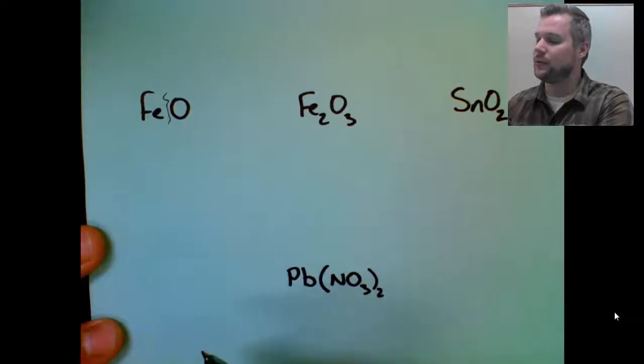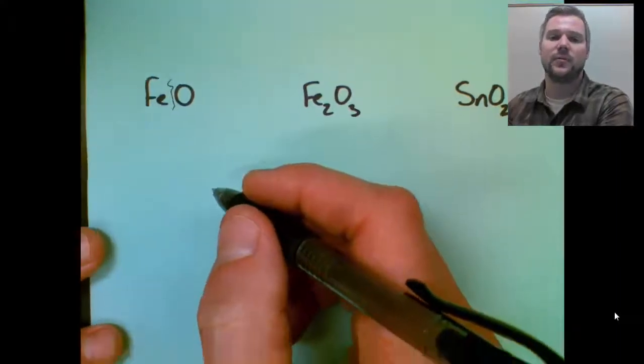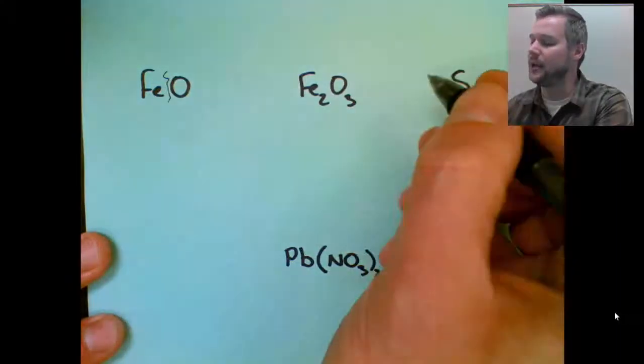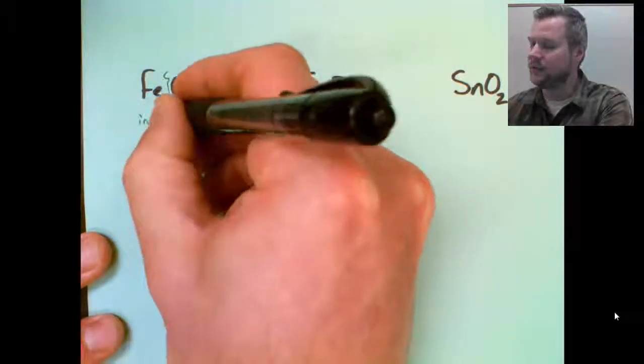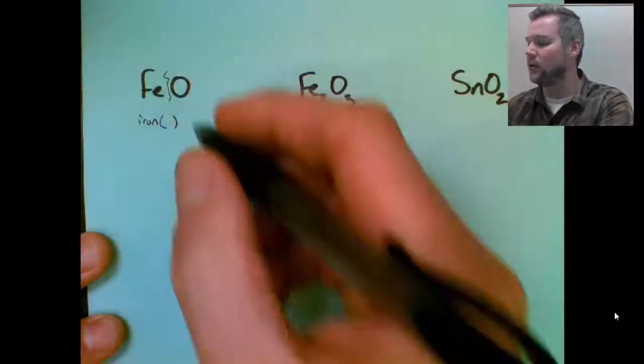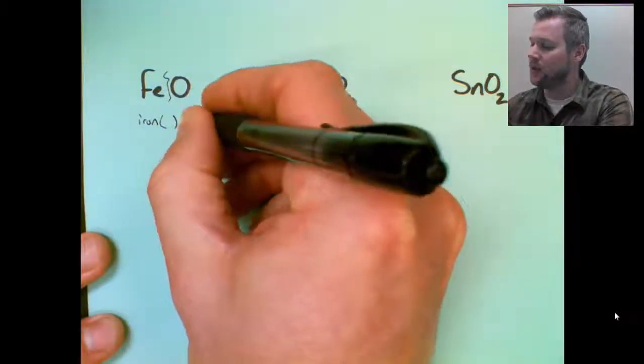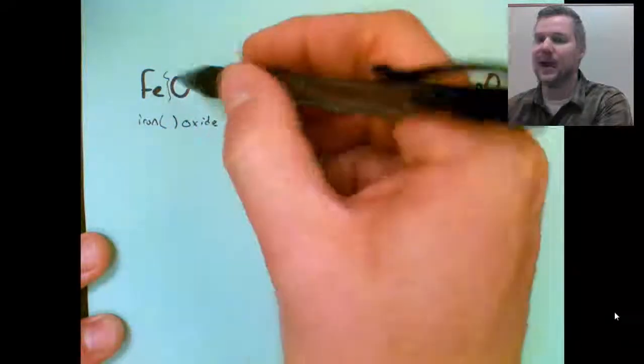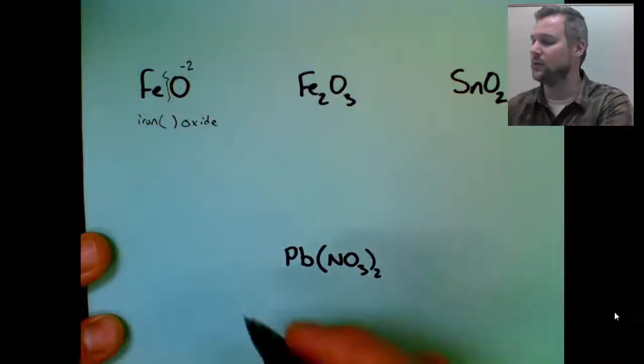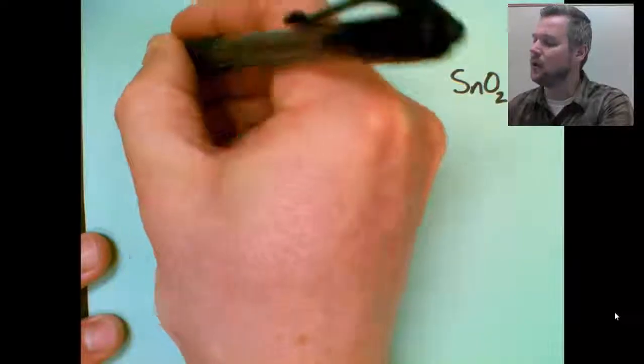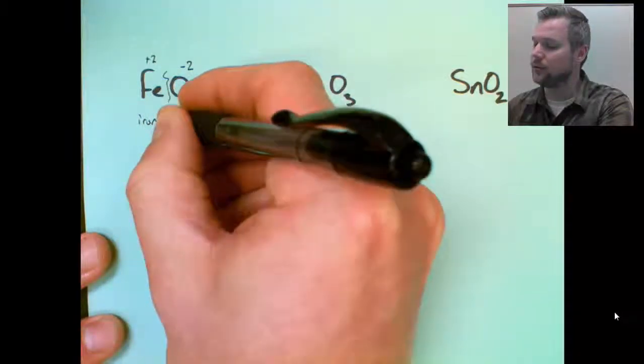Iron does take Roman numerals, and I know that because it lives in the transition metals. Most of those take Roman numerals, and it says it on the back of my periodic table, so I know it's going to be iron something, so I will leave the space for my Roman numerals. O is called oxide. I figure out Roman numerals by looking at the back end of my formula. O is a minus two charge. Formulas have to sum to zero, so that means that iron has to be plus two, which gives me Roman numeral two.